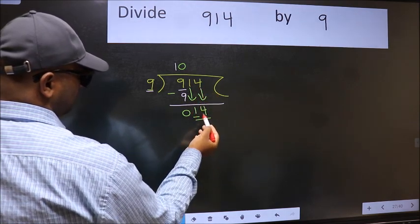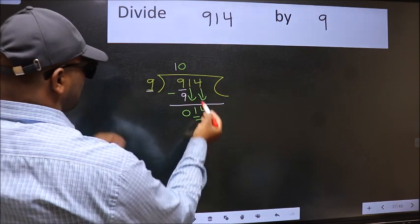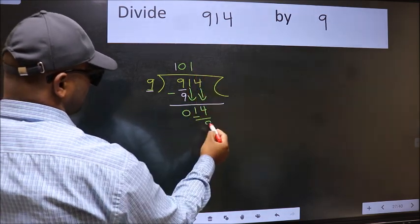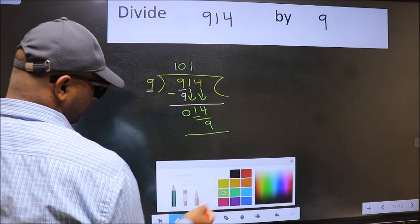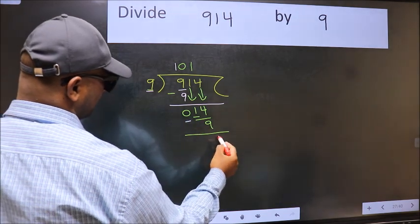Now 14. A number close to 14 in 9 table is 9 once 9. Now we should subtract. We get 5.